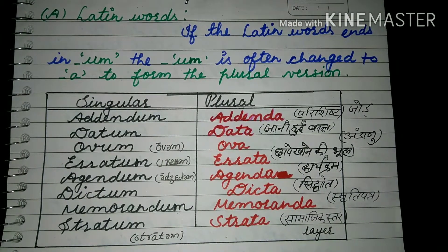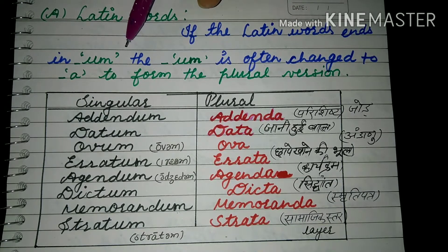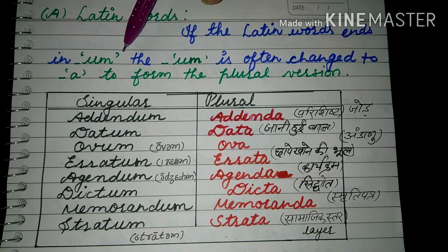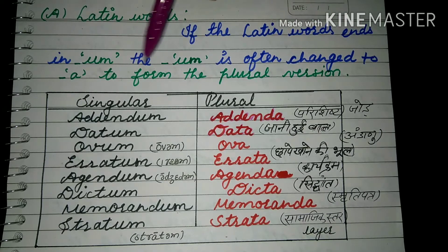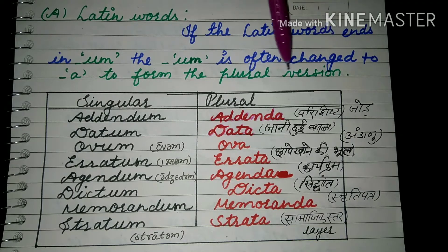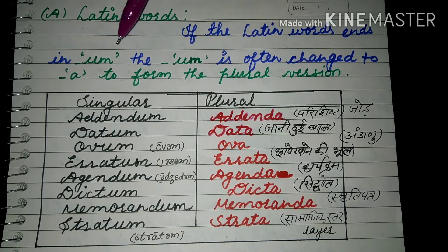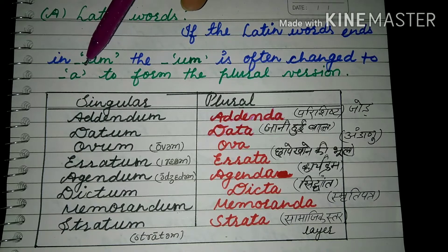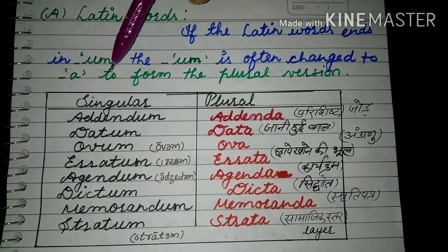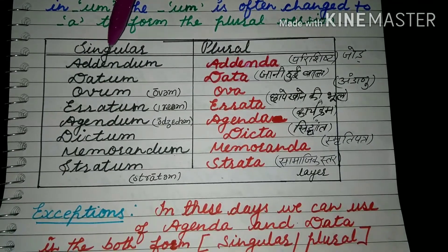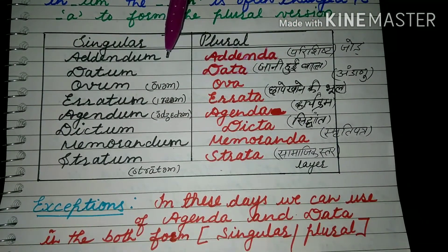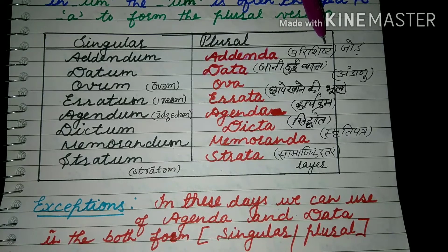Now we have to learn about some Latin words. If a Latin noun ends in '-um', the '-um' is often changed to '-a' to form the plural. For example: 'addendum' — meaning an addition or supplement — its plural is 'addenda'. 'Datum' — meaning a known fact — its plural is 'data'. 'Ovum' — meaning an egg — its plural is 'ova'.